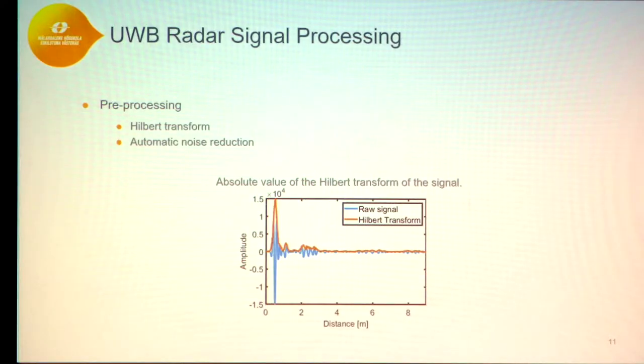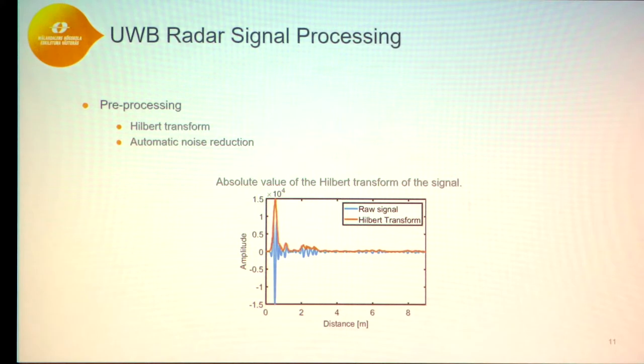The signal processing starts with pre-processing. First, we applied a Hilbert transform, which envelopes the signal and makes it easier to represent the target in the processed signal. Another technique we developed was automatic noise reduction — an offline method where we measured the median of all radar sweeps, multiplied it by a sensitivity factor, and used this to filter out low-amplitude signals that do not represent a target.